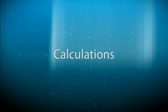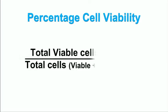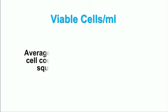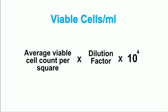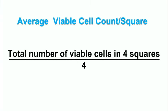Now the calculations. The percentage of cell viability can be calculated using the formula: total viable cells (unstained) divided by total cells (viable and dead), multiplied by 100. Viable cells per milliliter equals the average viable cell count per square multiplied by the dilution factor multiplied by 10 to the power of 4. The average viable cell count per square equals the total number of viable cells in 4 squares divided by 4.